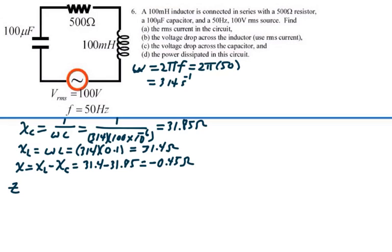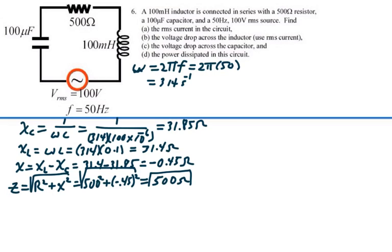So our impedance is the resistance squared plus the net reactance squared, square root. And that's going to be 500 ohms squared plus a negative 0.45 ohms squared, square root. And if you calculate all that, it will come out to 500 ohms.